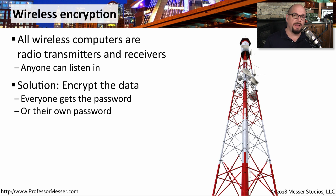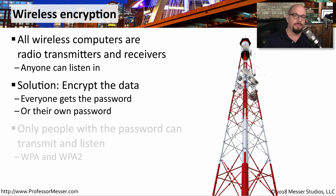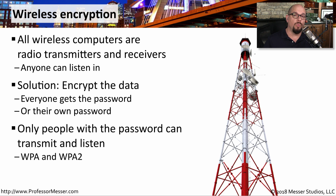To make sure that all of this wireless communication is protected, we will normally encrypt this data as it's going over the wireless network. Everyone would get their own password to use, or there would be a shared password for everyone to use on that wireless network. This means that only the people with the correct credentials would be able to communicate on this wireless network. And if someone does capture this encrypted wireless communication going through the air, they wouldn't be able to view or understand any of that encrypted data.